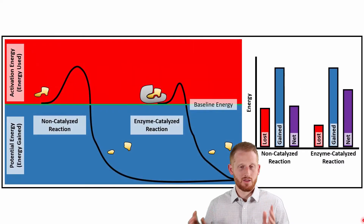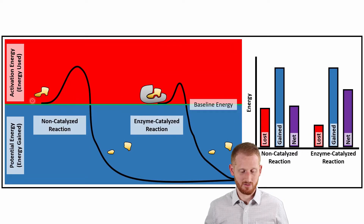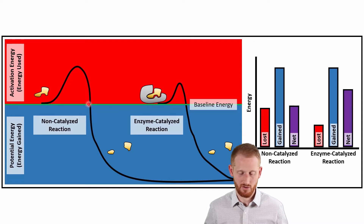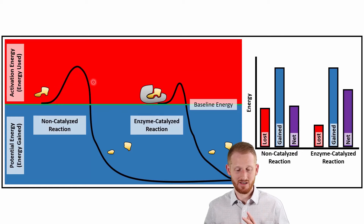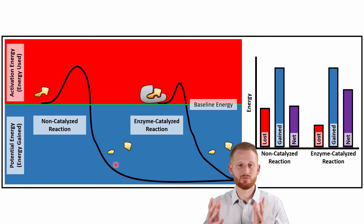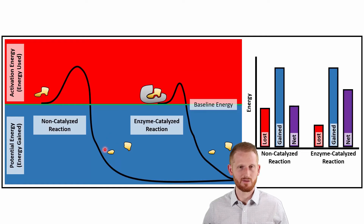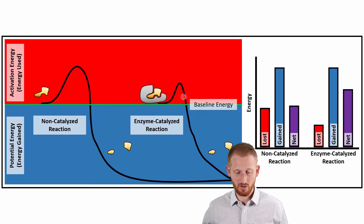How does this work in the body in real life, getting beyond the metaphor? We have energy that has to be put into the reaction in order to activate it and make it go forward — this is our activation energy. Everything above the green line in the red space is our activation energy, and we want to minimize our activation energy to make the process as efficient as possible. Once the reaction is activated, it's going to break down the substrate into whatever it's going to be broken down into, or combine the substrate with another substrate. If we have the enzyme present, the activation energy is much smaller in order to get this process to carry out breaking down the substrate.